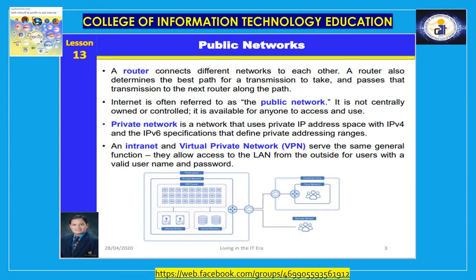The public networks. The most important thing you should understand about the internet is that it is a public network — in fact, it is often referred to as the public network. It is not centrally owned or controlled. It is available for anyone with a valid IP address and an internet connection to access and use. For this reason, no one can police the internet to protect, control, or monitor the people who use it. Think about all the people around the world who connect to the internet every day. Anytime you connect to the internet, you can potentially connect to anyone else who is connected.